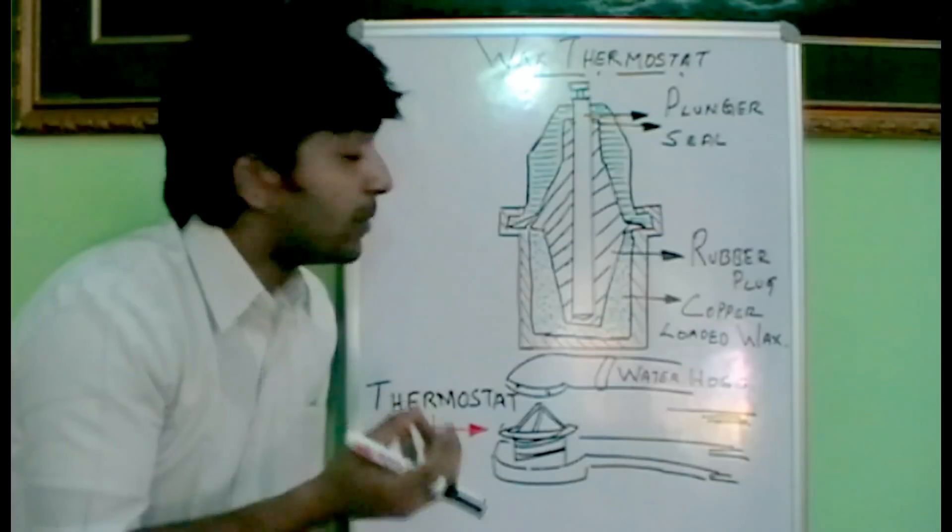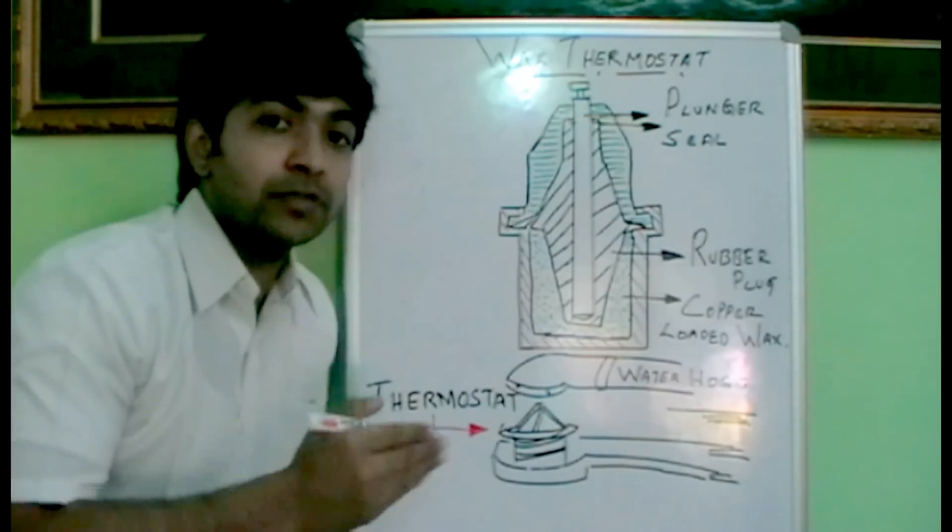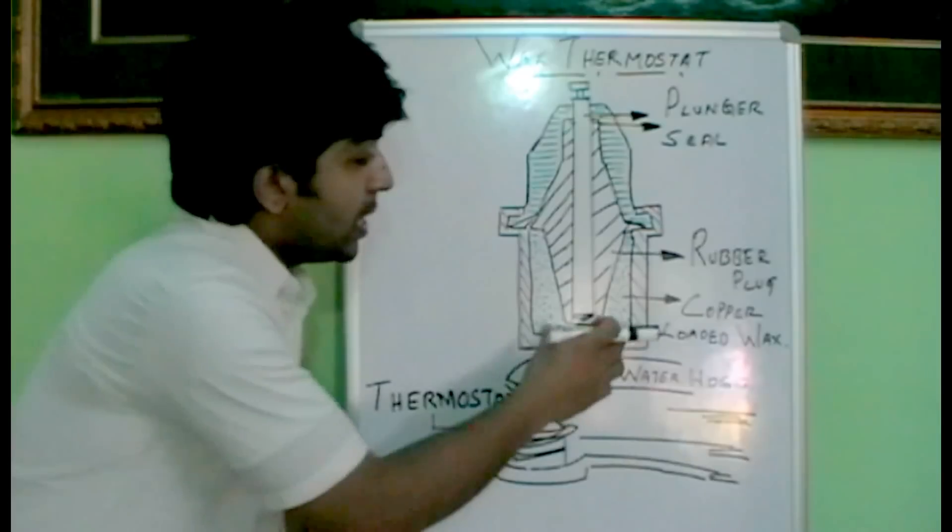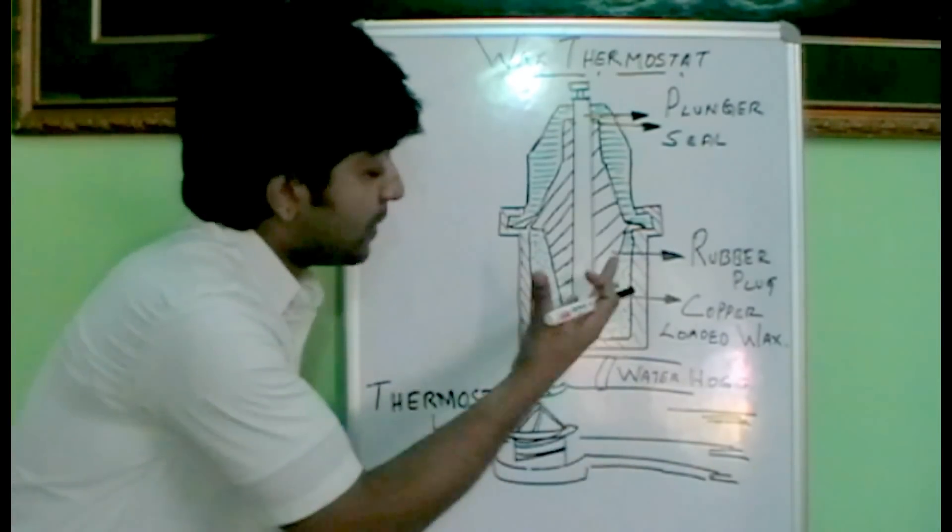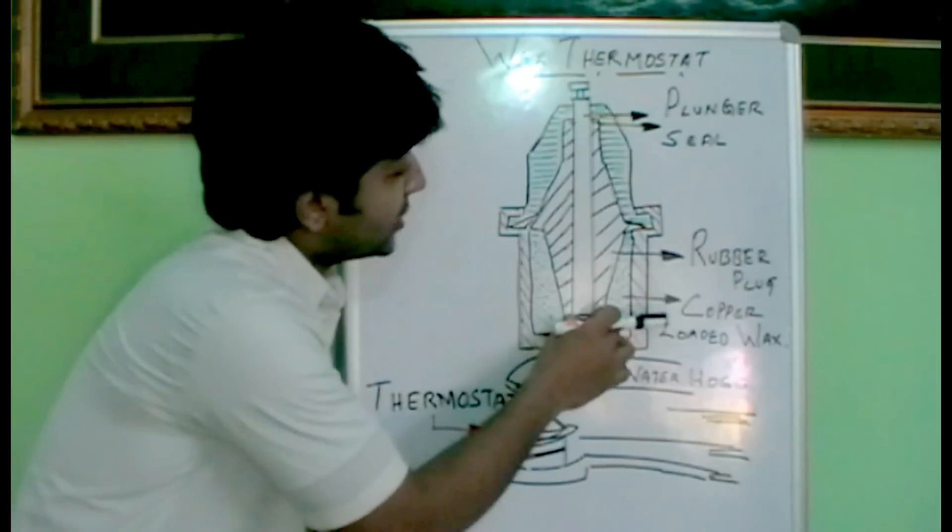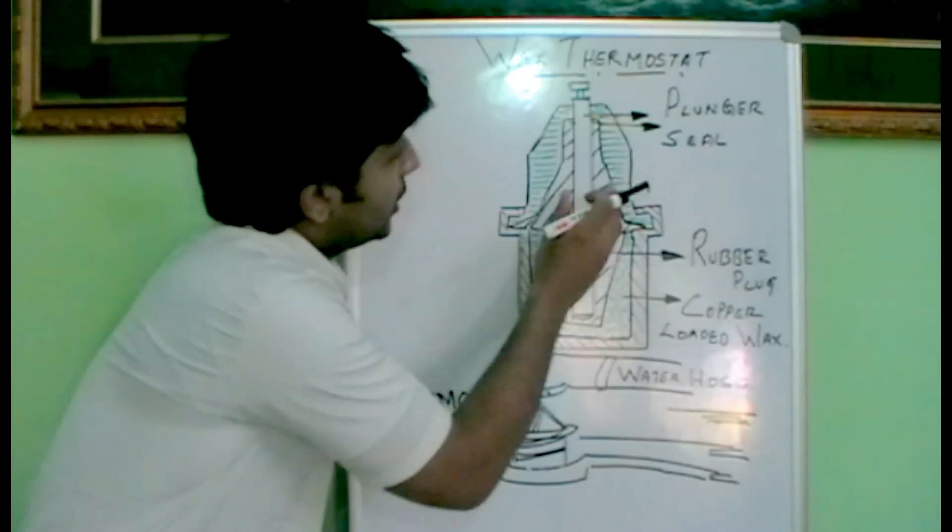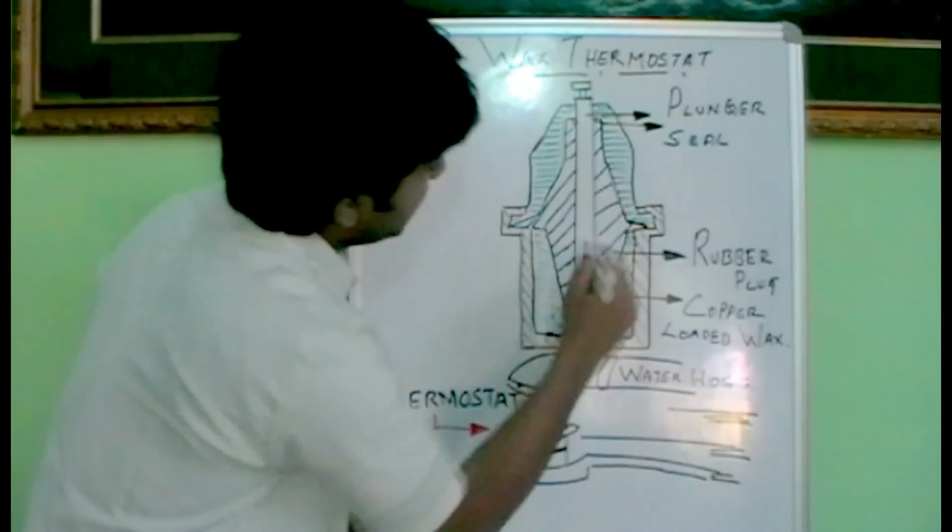So what happens when the optimum temperature of the engine, which ranges from 75 to 85 degrees Celsius, is reached? This copper loaded wax, because of its high coefficient of thermal expansion, expands and results in the contraction of this rubber plug towards this plunger.